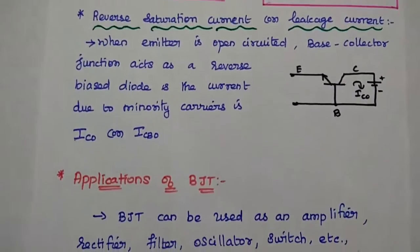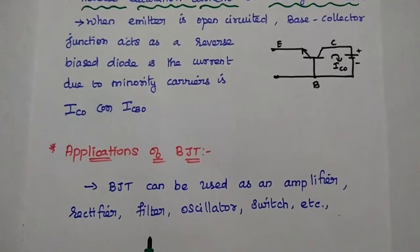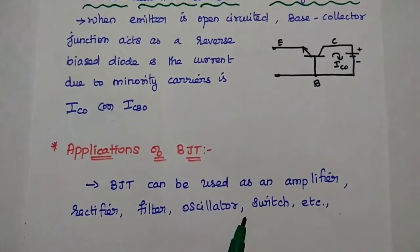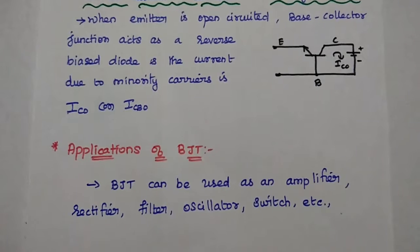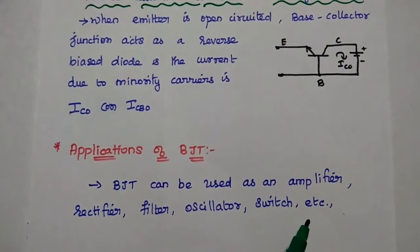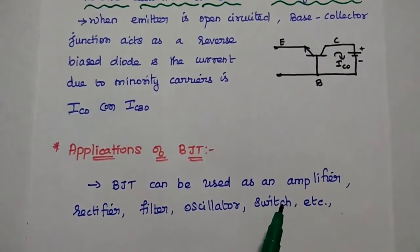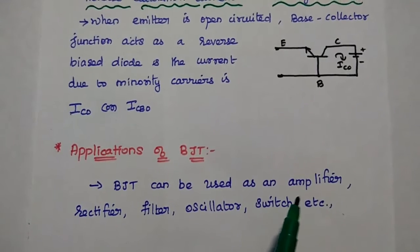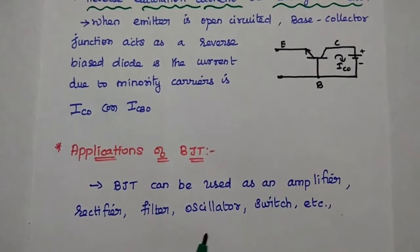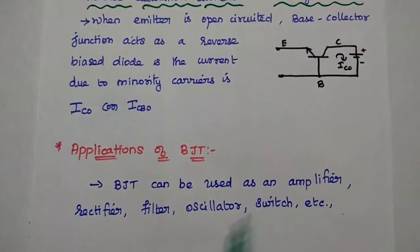Next, applications of BJT. Bipolar junction transistors are widely used as an amplifier, rectifier, filter, oscillator, switch, etc. It is mainly used in audio amplification, impedance matching, oscillator, and filter applications.